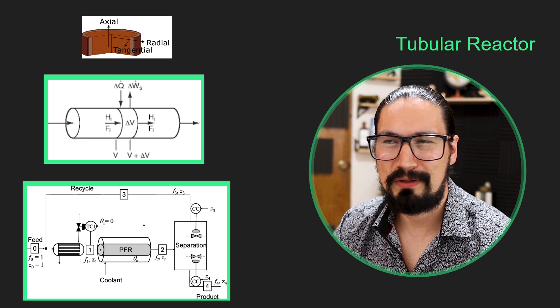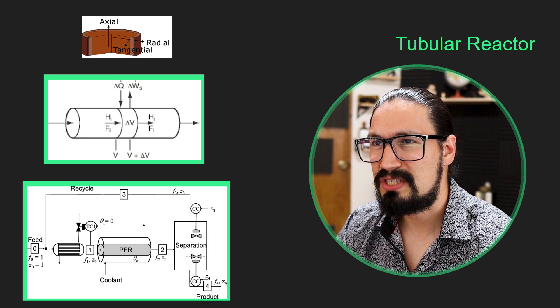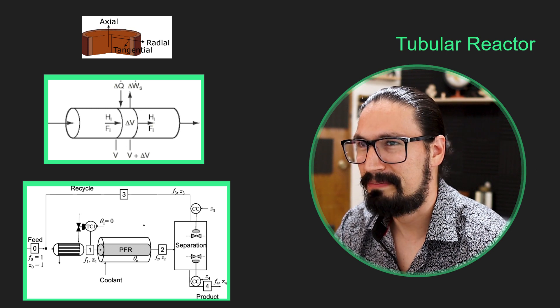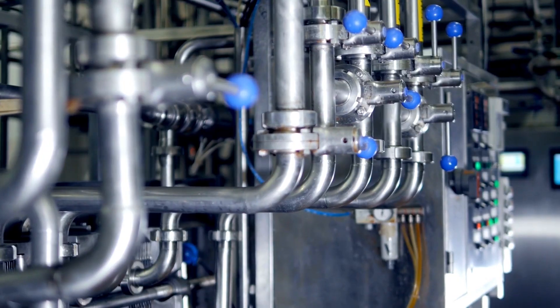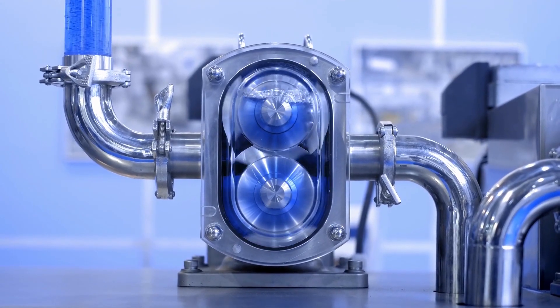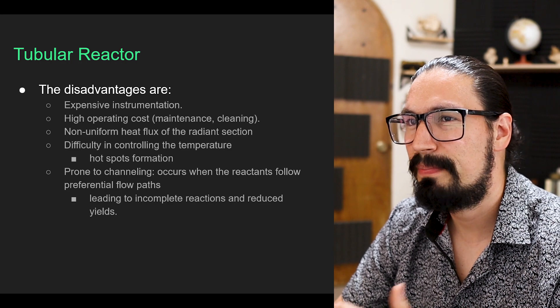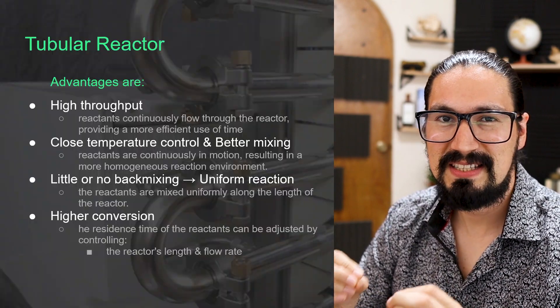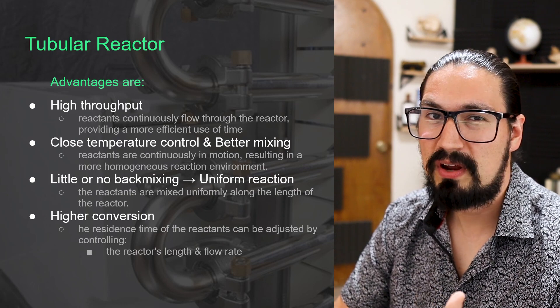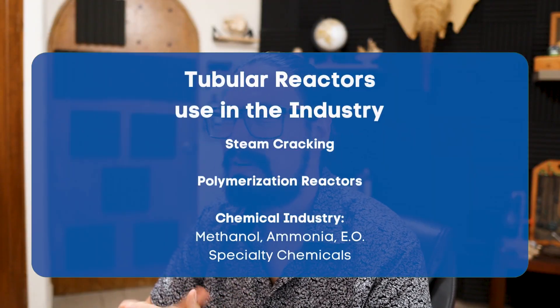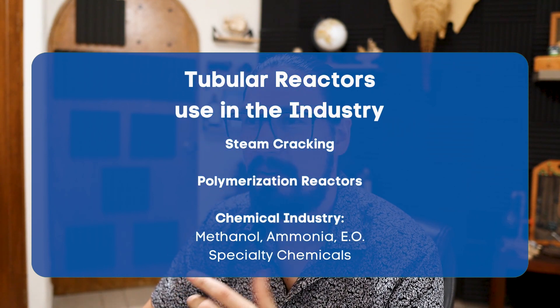The tubular reactor, which is pretty similar to the PFR we studied academically, is one of the most important ones. We're talking about a reactor which is essentially a pipe, and piping is everywhere in industry — engineers naturally made a reactor out of a pipe. Mixing between pipelines became common since the invention of piping itself. The reactor operates continuously and is quite optimal compared to the stirred tank reactor. Unfortunately, there are pressure drops, but overall it's a great option. These reactors are very scalable since we can increase pipe diameter or length. Best examples include steam cracking, polymerization reactions, and chemical production such as methanol, ammonia, ethylene oxide, and various specialty chemicals.